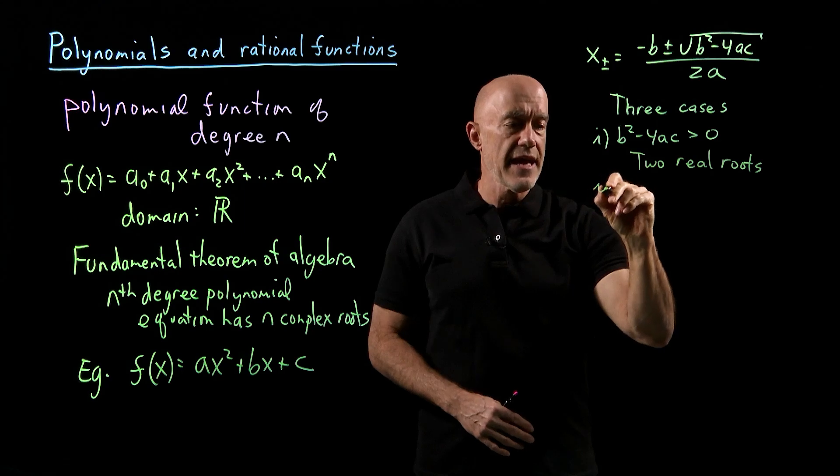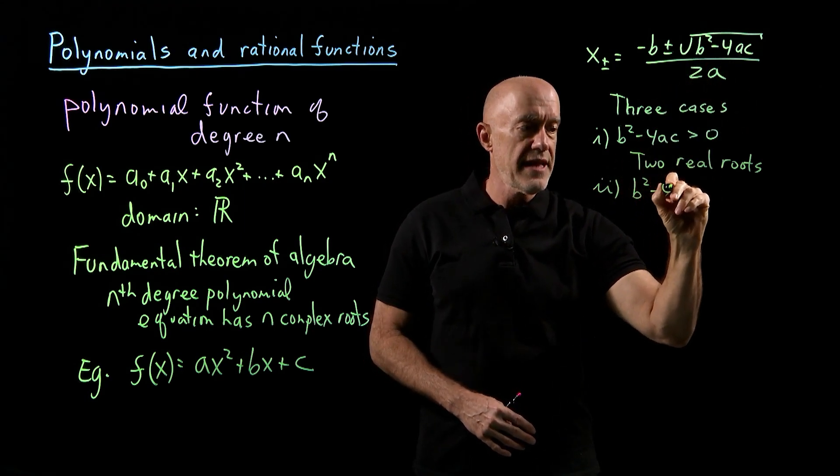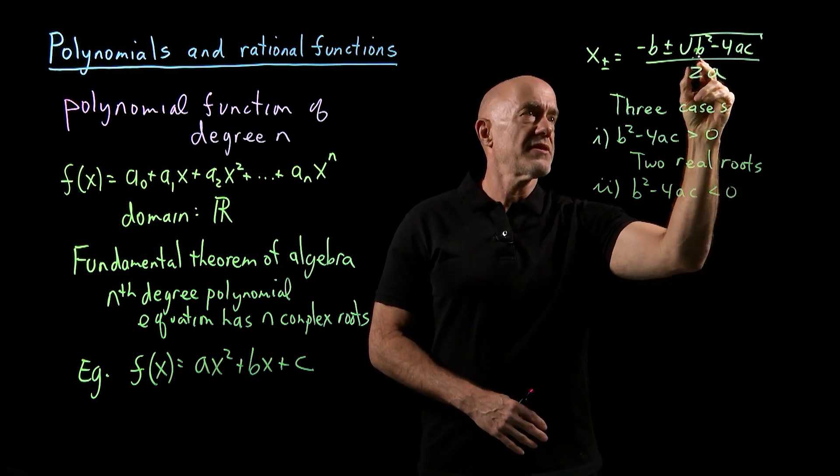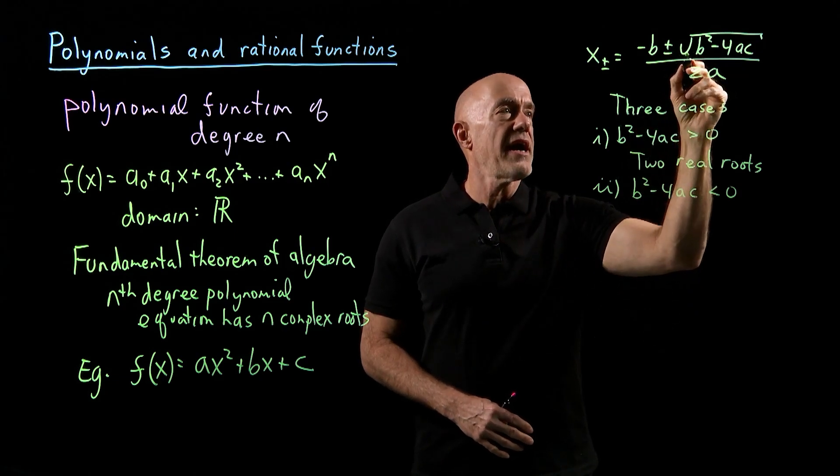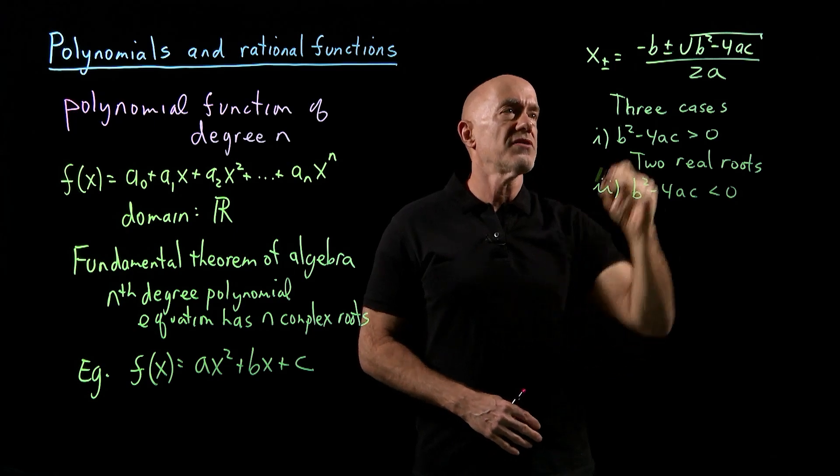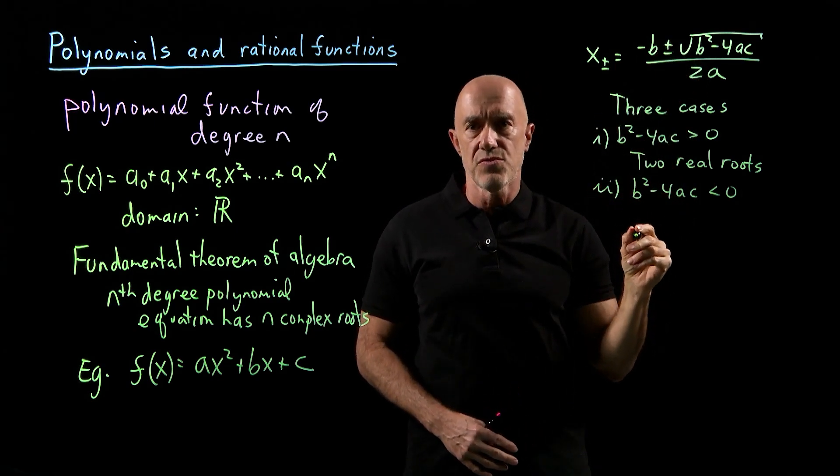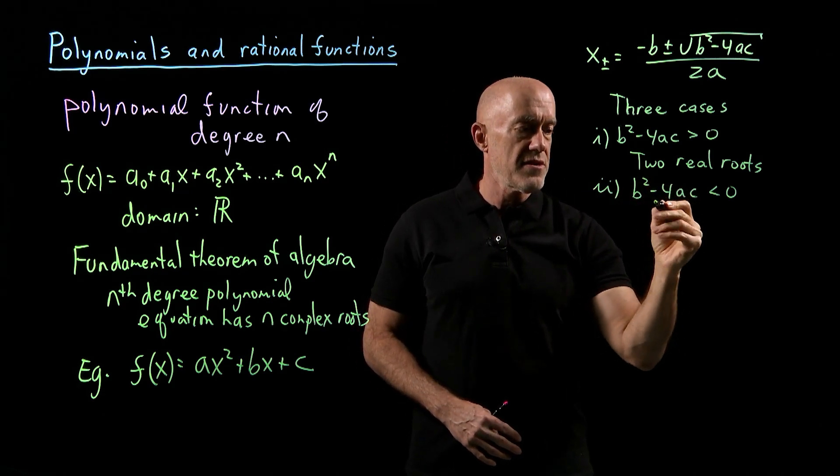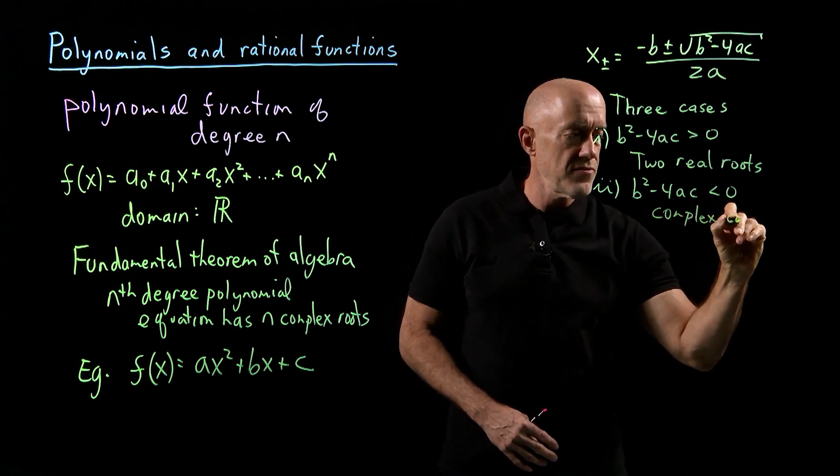Then the second case is when b² minus 4ac is negative. This is the square root of a negative number, which becomes i times the square root of 4ac minus b². So it would be plus or minus i. In this case there are also two roots, but they are complex and they are complex conjugates.